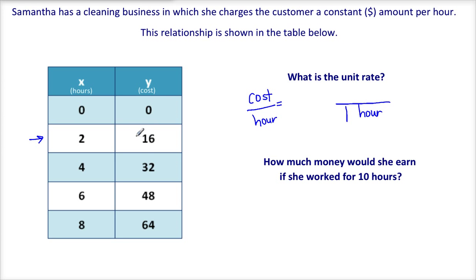So sixteen dollars corresponds with two hours of work. So the cost would be sixteen dollars, corresponds with two hours. Okay, so let's use this rate to help us figure out the unit rate. So to go from two hours to one hour, I divide by two. Two divided by two is one. So let's do the same thing on the top to keep it all fair. Sixteen divided by two is eight.